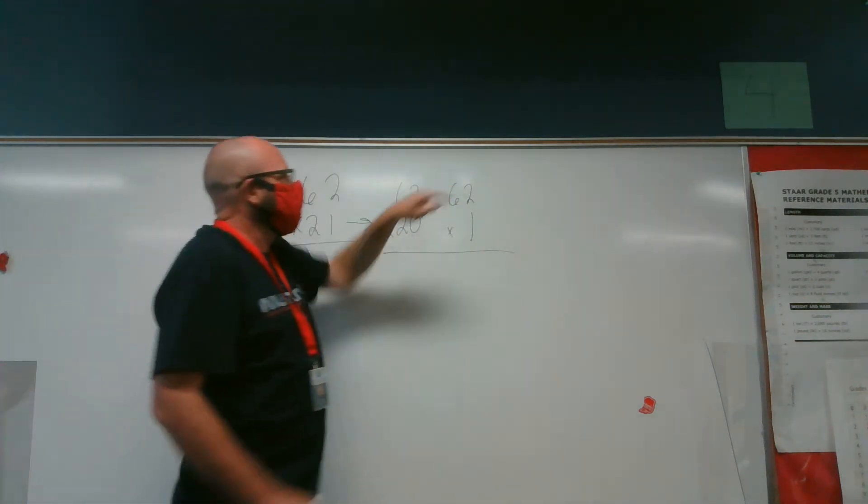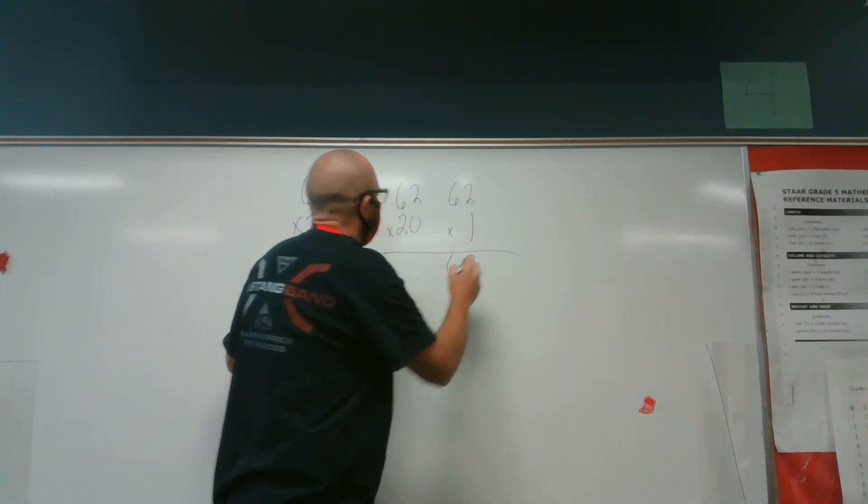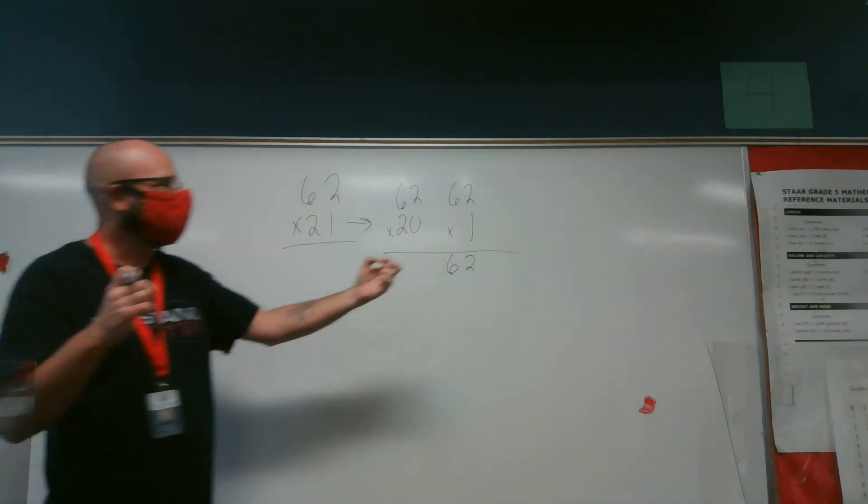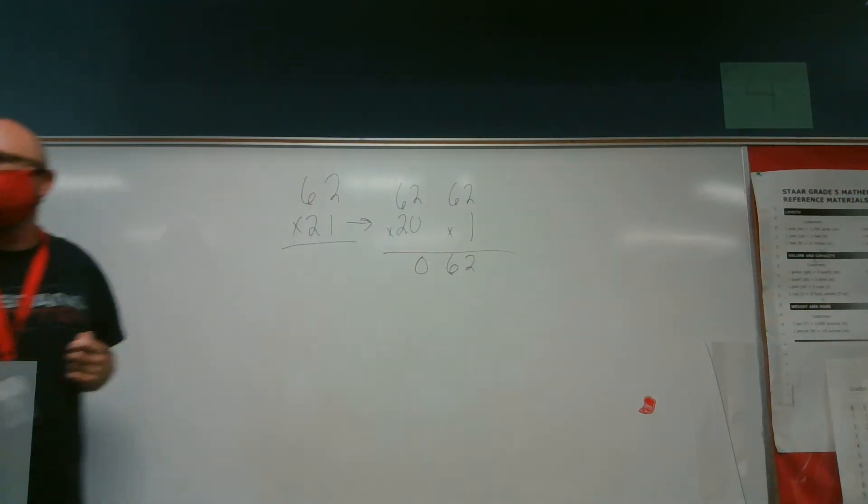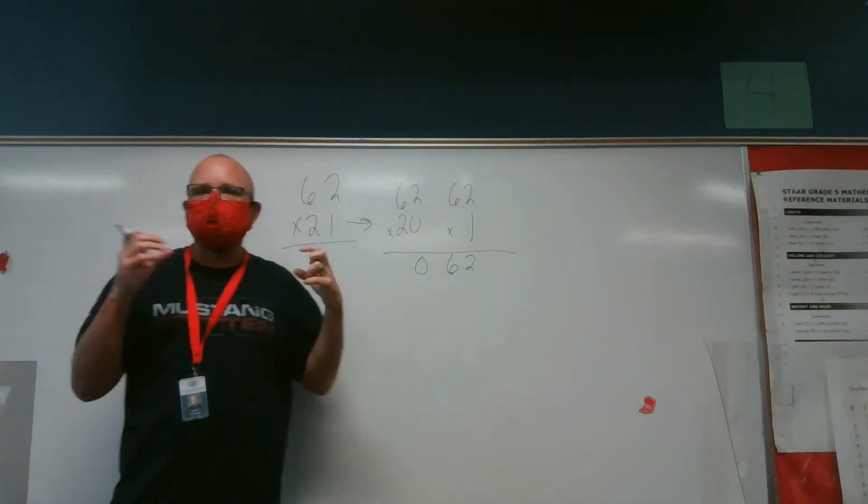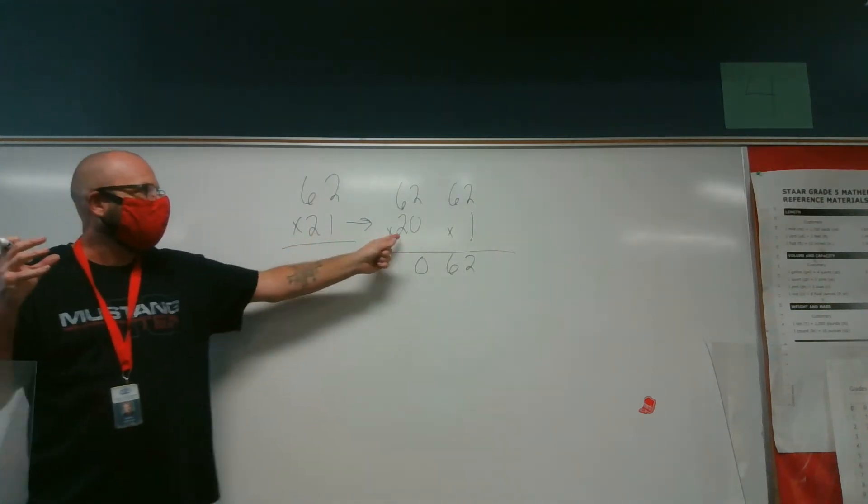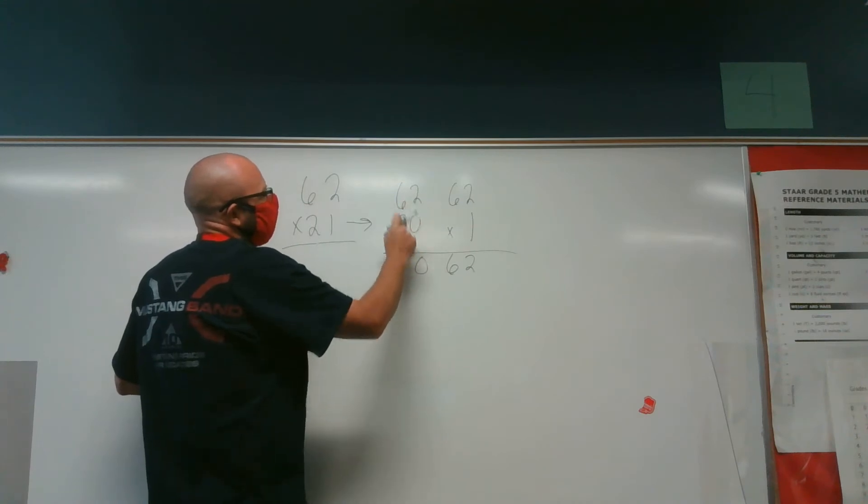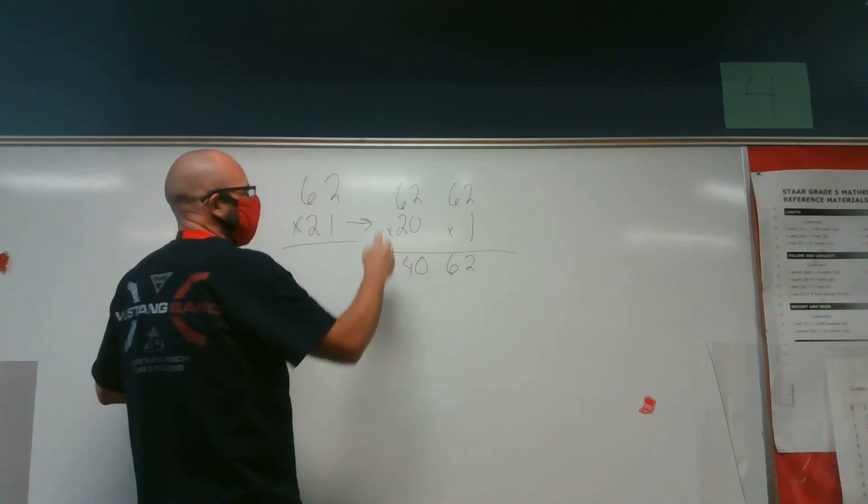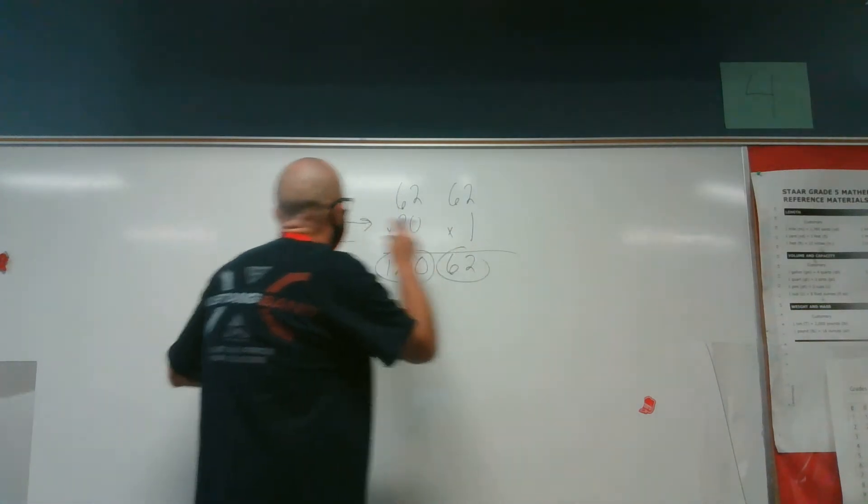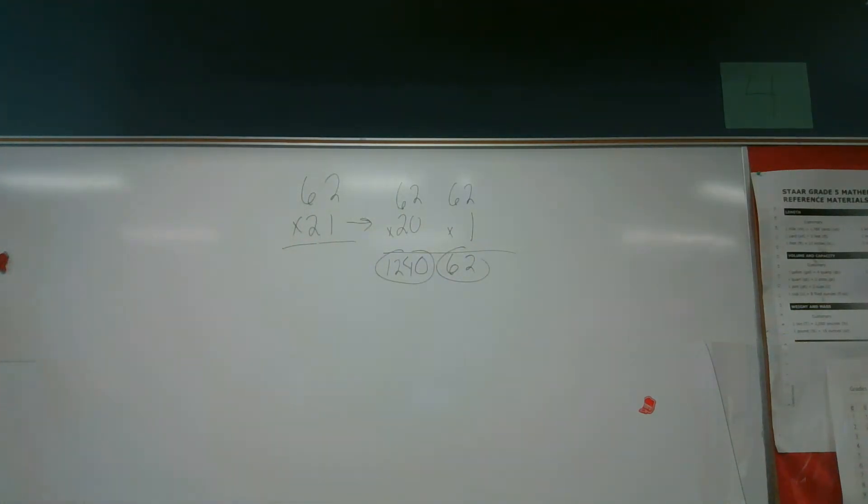But if I go 62 times one, that's obviously 62. 62 times 20, I have that trailing zero. So all I have to do is move that zero down. That's what makes it easier when I break it apart, when I do the expanded form. Because then all I have is my two left. And 62 times 2, 2 times 2 is 4, 2 times 6 is 12. And we're going to get the same, these two numbers are going to appear in this problem when we use the standard algorithm.